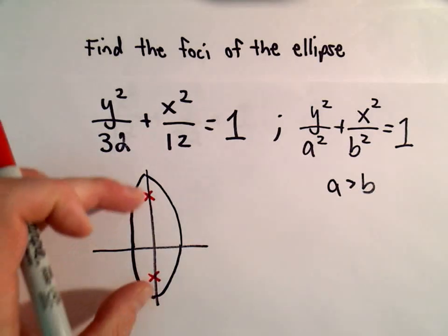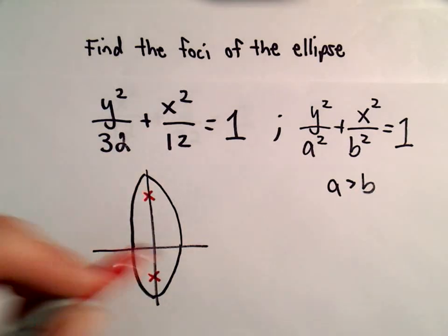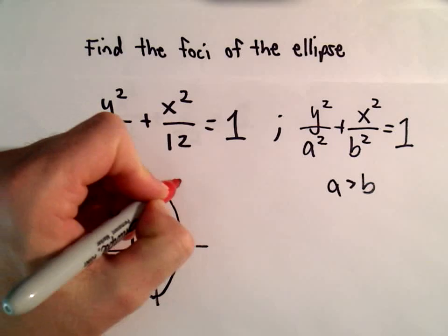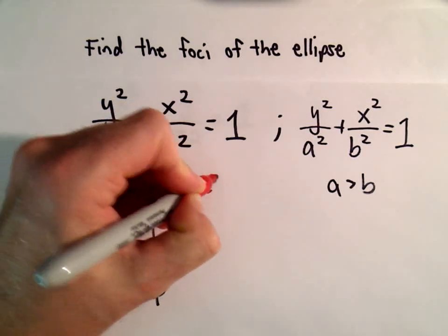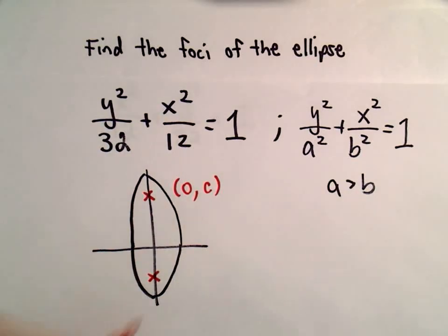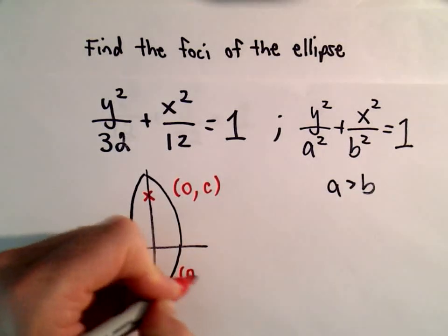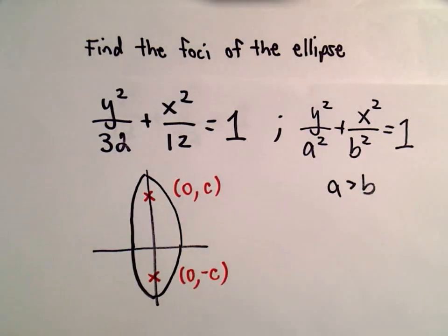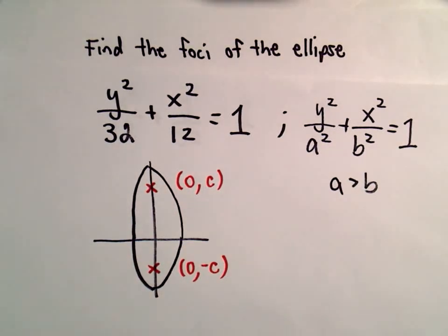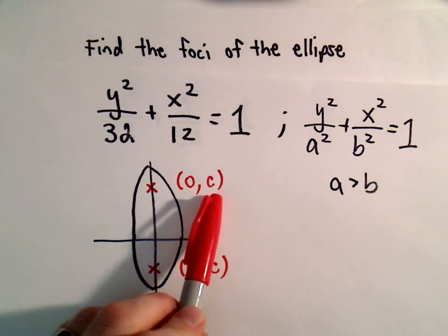The foci are going to be along that vertical axis. The coordinates of the foci are going to be (0, c), or how we label them generically, and (0, -c). The question is, we need to figure out this value c.